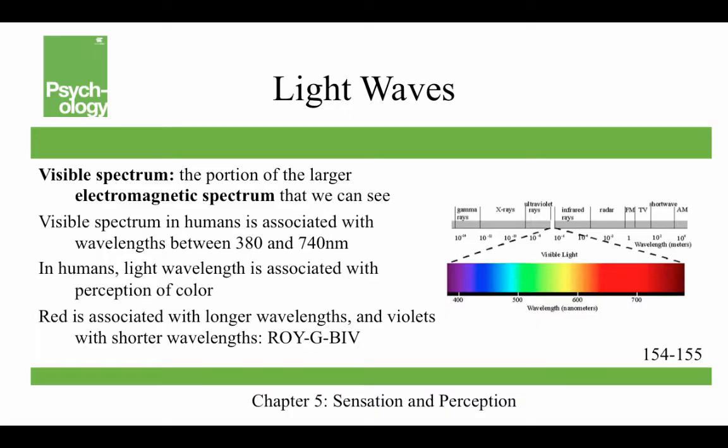Red is associated with longer wavelengths and violet with shorter wavelengths. A way to remember the visible spectrum is with the mnemonic ROYGBIV: red, orange, yellow, green, blue, indigo, and violet.